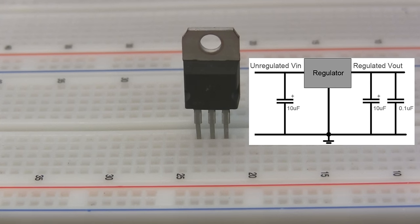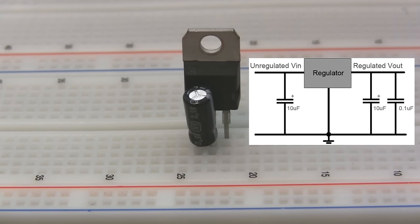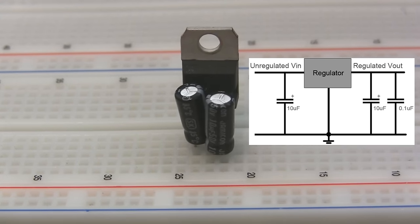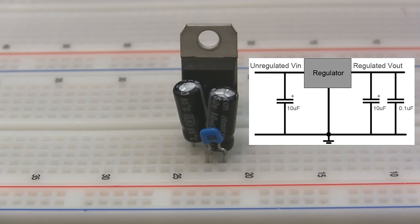So let's say you've got a voltage regulator. Let's say you've got an LM7805 for 5 volts and want to wire it up. Well that's really easy. All you need is the regulator and three capacitors. 10µF on the input, 10µF on the output, and finally a 0.1µF ceramic capacitor on the output.